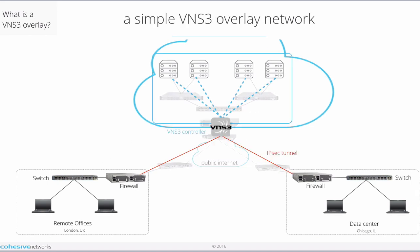Now if you add in VNS3 — that virtual firewall router switch and all of that — the same native topology is present, but with an additional VNS3 controller on top. VNS3 is a software-only virtual appliance running within the host hypervisor. It creates an overlay network in your cloud, separating network identity from physical network location. The VNS3 controller acts as a virtual switch to provide overlay connectivity to each of the compute hosts and switch traffic between them.